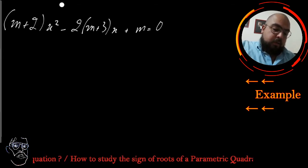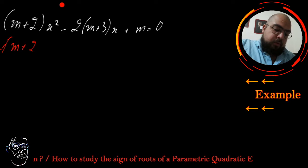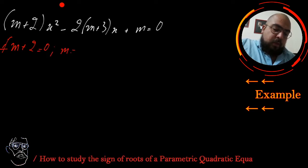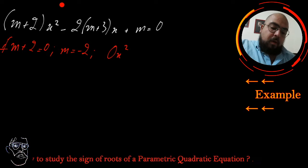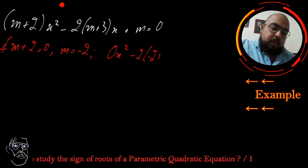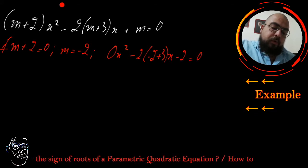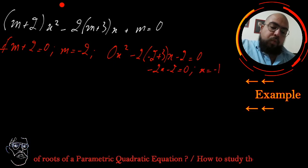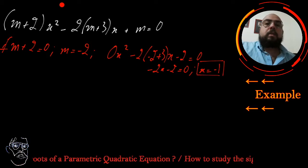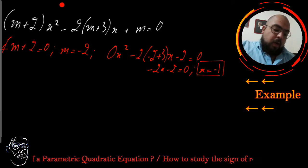The first thing I should do is check what happens if m+2 = 0, which means m = -2. For m = -2, I will have 0·x² - 2(-2+3)x - 2 = 0, so the equation transforms to -2x - 2 = 0, giving x = -1. So x = -1 is a solution — it becomes a linear equation whenever m = -2.